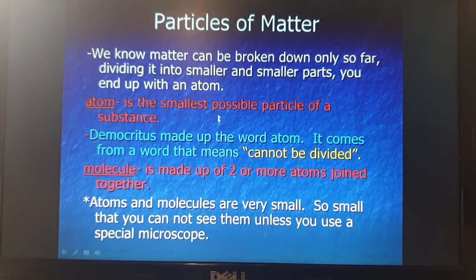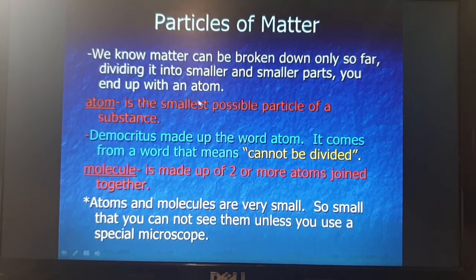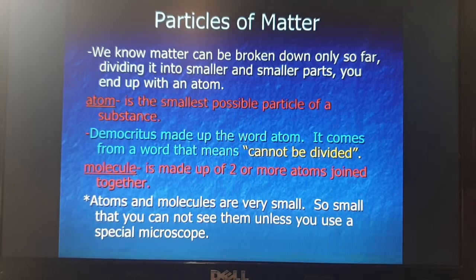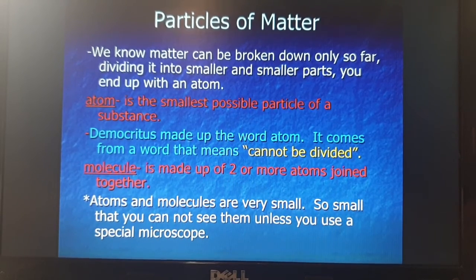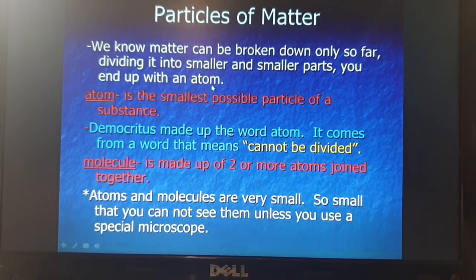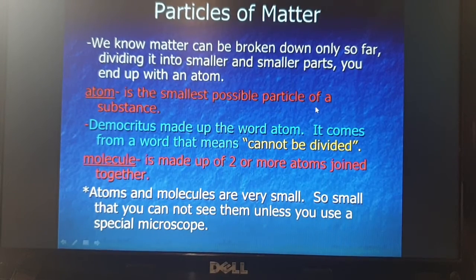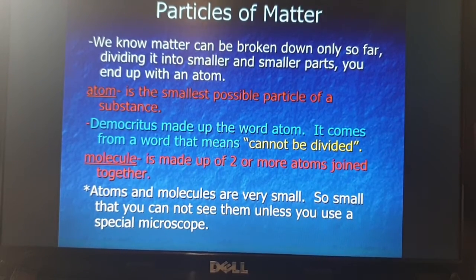What are the particles of matter? We know matter can be broken down only so far — dividing it into smaller and smaller parts, you end up with an atom. For example, when you take a chalk and start breaking it into smaller and smaller parts, at last you come to a point where you cannot further cut the chalk. That point where it stops dividing is itself an atom. Atom is the smallest possible particle of a substance.